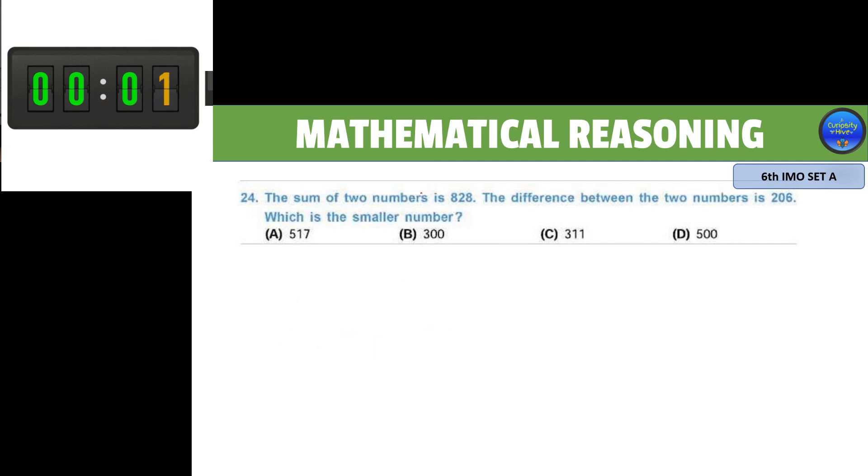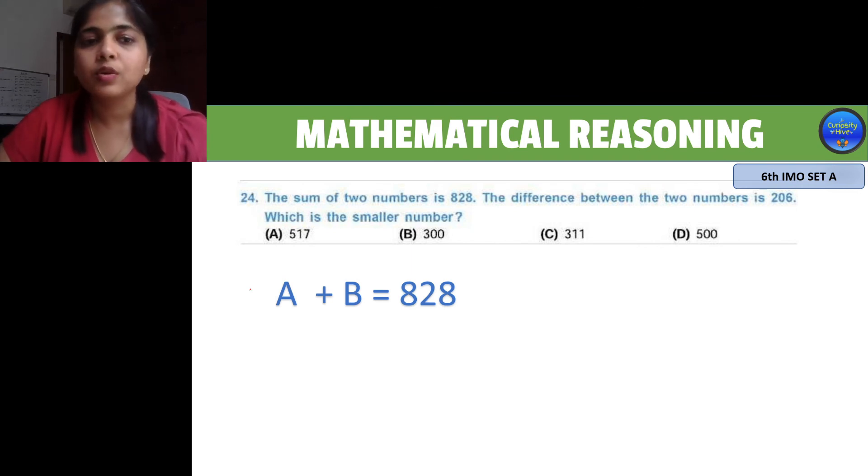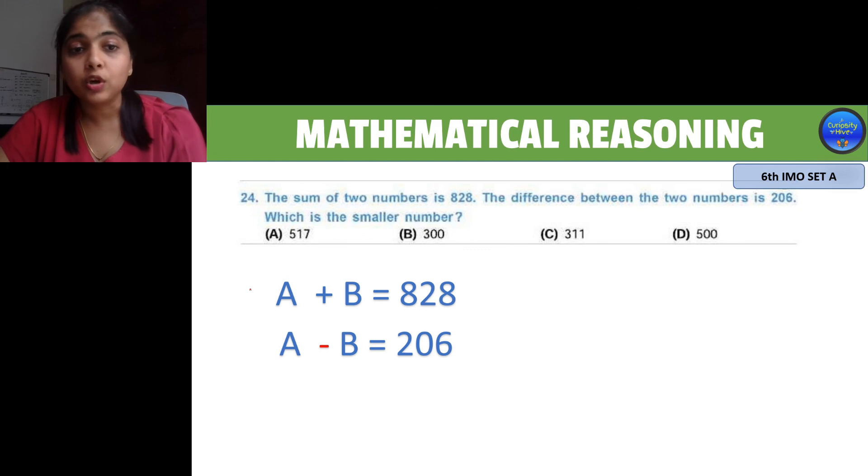They have asked us to find which is the smaller number of the two numbers that make the sum of 828. We have two unknown numbers, let's call them A and B, which equals 828. We also know that the difference between these two numbers is 206. We need to find both numbers to know which is the smallest. A quick and easy trick is to add both equations because when you add both sides, the answer will also be equal.